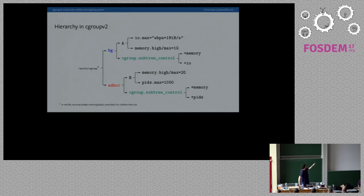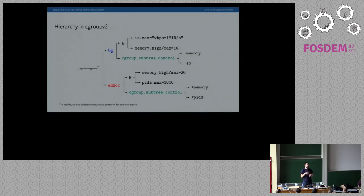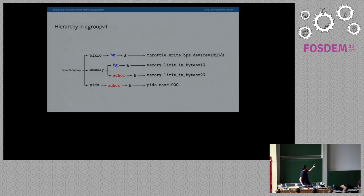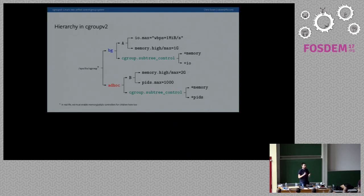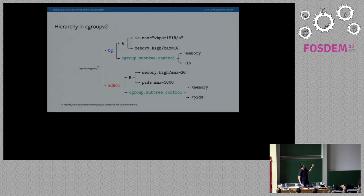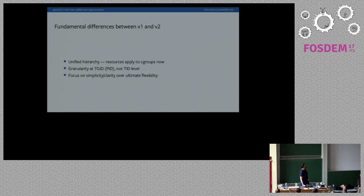In cgroupv2, you write to the special file cgroup.subtree_control, which enables those controllers in the children of that cgroup. If you don't enable them there but they are enabled at the next level up, those processes compete freely for those resources. You enable controllers like memory, PIDs, CPU, and IO by writing +memory, +pids, +cpu, +io to cgroup.subtree_control, and the corresponding files appear in that directory instantaneously. You also need to enable the controllers at the top level for this to work.